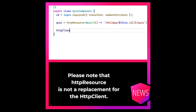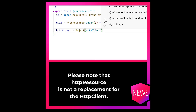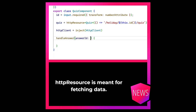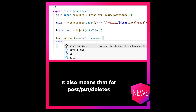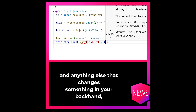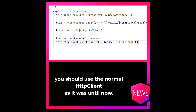Please note that HTTP resource is not a replacement for the HTTP client. In fact, it uses the HTTP client under the hood. HTTP resource is meant for fetching data. That means for POST, PUT, DELETE, and anything else that changes something in your backend, you should use the normal HTTP client as it was until now.